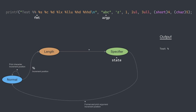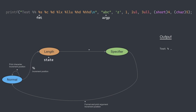Now that we've finished processing the format specifier, we can transition back to the normal state. Now we are looking at another space character, so we remain in the normal state. Next we have another % character, so we switch to the length state and advance. The current character is S, which is not a valid length specifier, so we jump to the specifier state. Same as before, we print the string argument and move on.